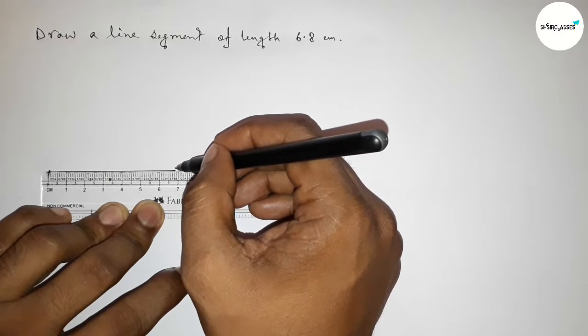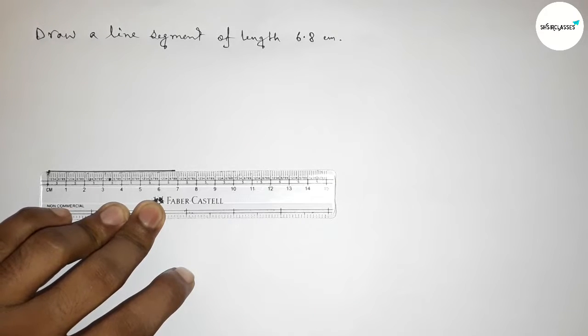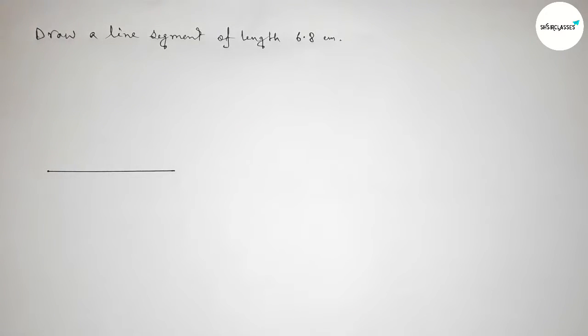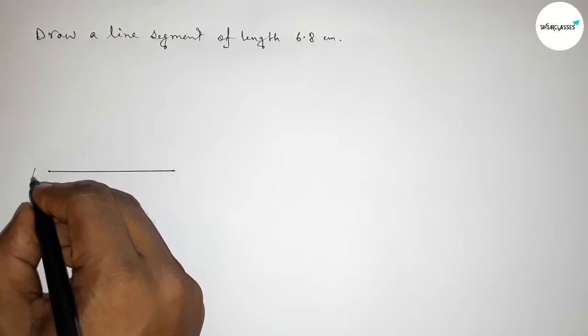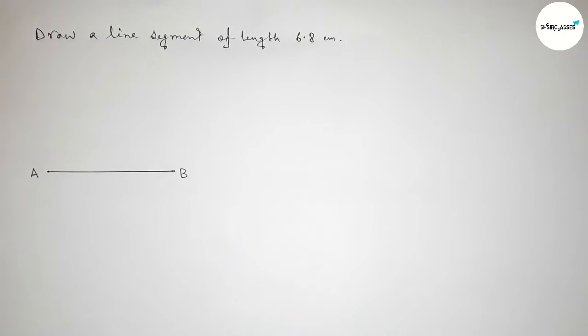And join this line by this way. Okay, so now taking here point A and here B. So AB is a line segment of length 6.8 centimeters.